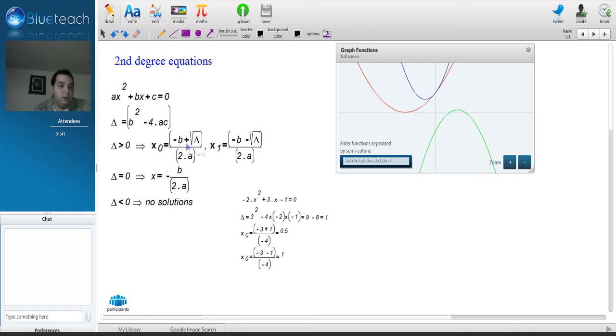So we can calculate the two solutions. First solution is -b + √Δ over 2a. And I've calculated this for you here, and we have the first solution, that's 0.5. Second solution, the same as the first one, except that you replace the plus here by a minus here. And you'll get the second solution, that's 1.